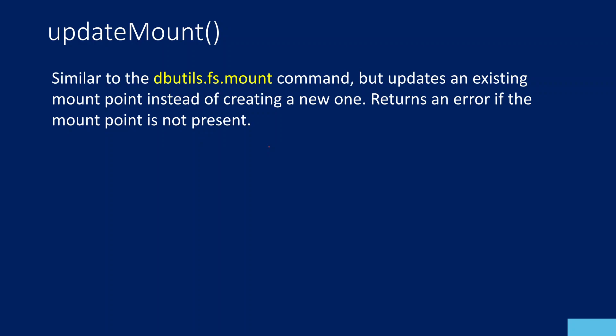Update mount point is going to update an existing mount point. Let's assume a mount point is pointing to some folder called ABCD. Now in future you want to make that mount point point to another folder called maybe the data folder — then you can use the update mount function and command to do that. I am going to practically show you now.